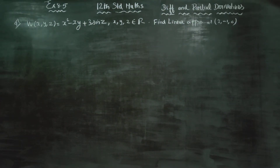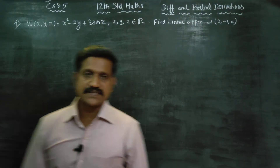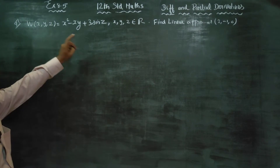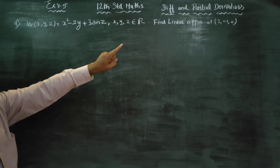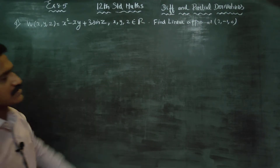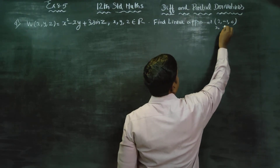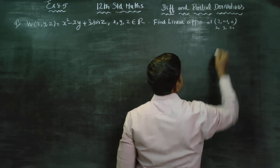Dear 12th standard students. W(x, y, z) is a function in x, y, z. In x is number 8.5, sum number 4. Find the linear approximation at the point (2, minus 1, 0). It is x₀, y₀, z₀ equal to (2, minus 1, 0).